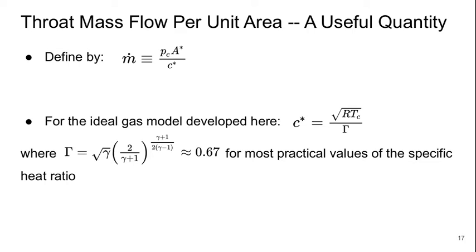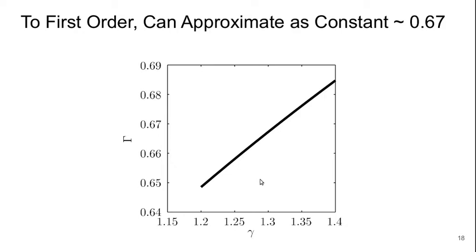And what is C star? Well, C star is, assuming we're dealing with an ideal gas, it's going to be this square root of R, the temperature in the combustion chamber over big gamma. And this big gamma is just this complicated thing that just has to do with the little gamma, the ratio of the specific heats. The good news is, we don't really need to often think about computing this big gamma very accurately, because it's about 0.67 for most practical values of the specific heat ratio. You can see that here.